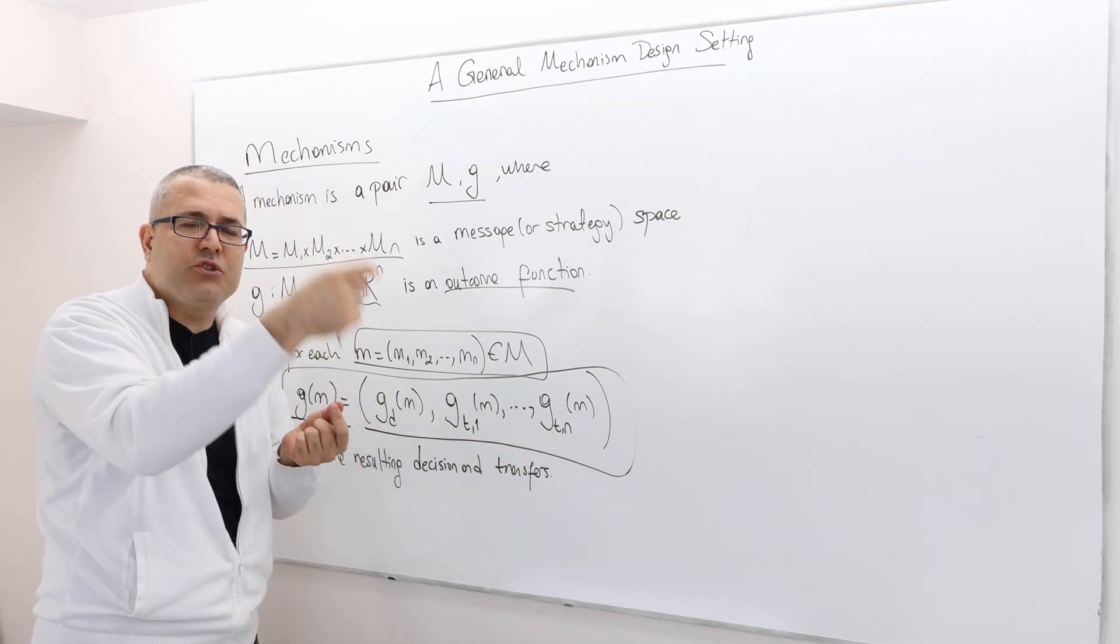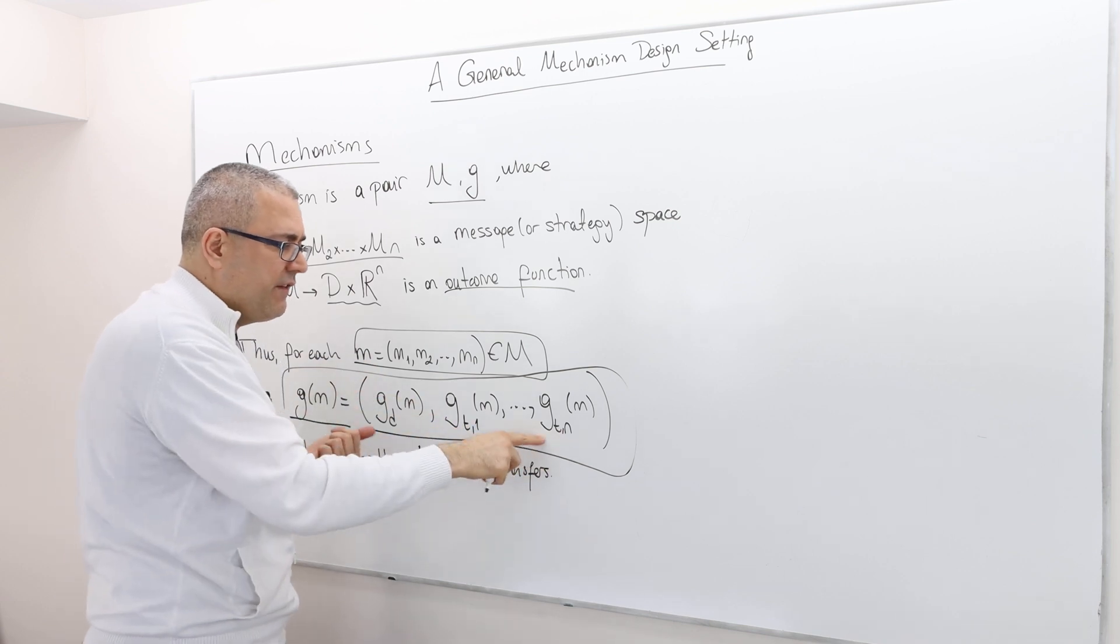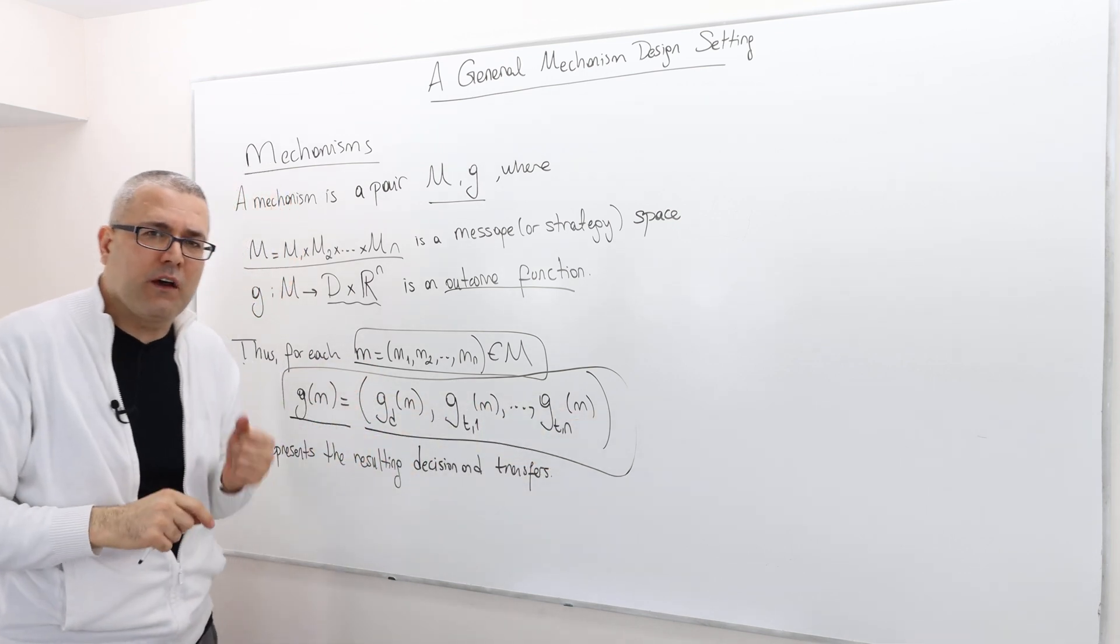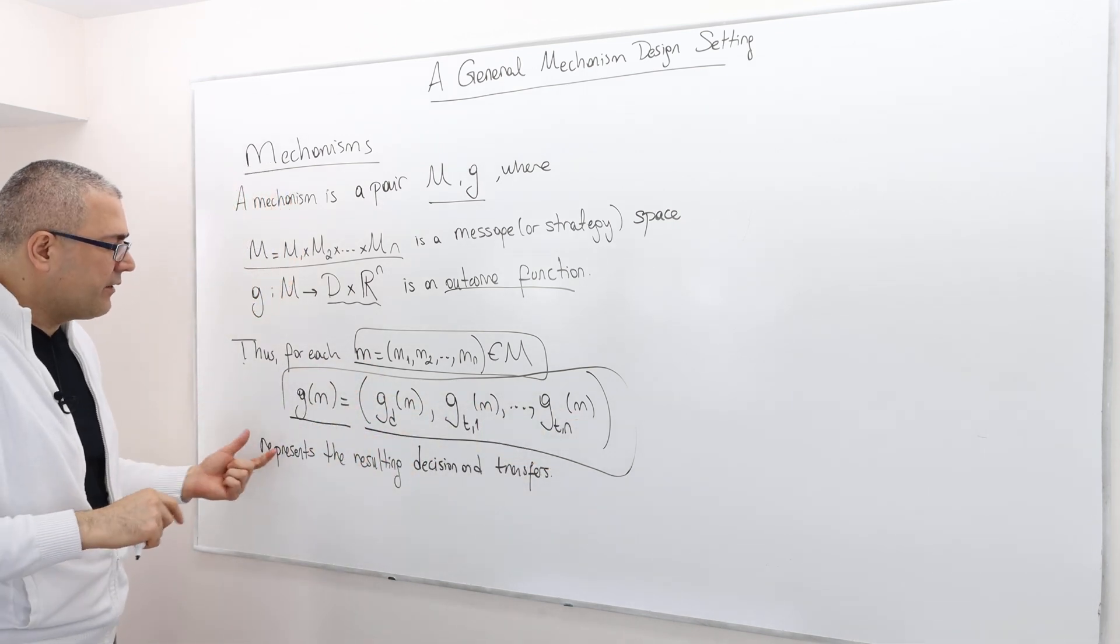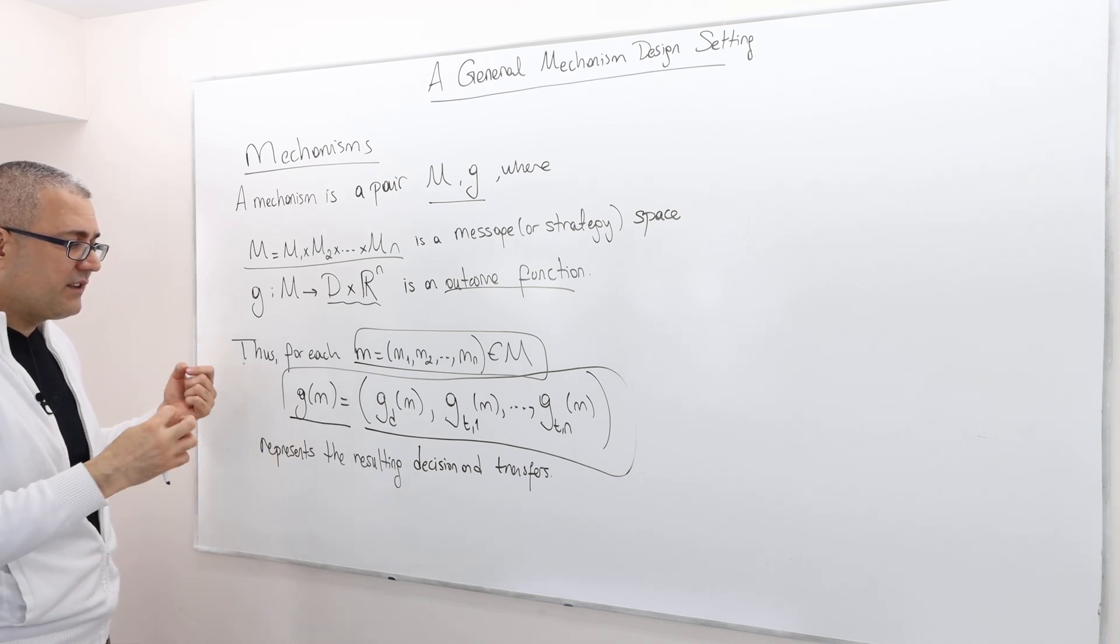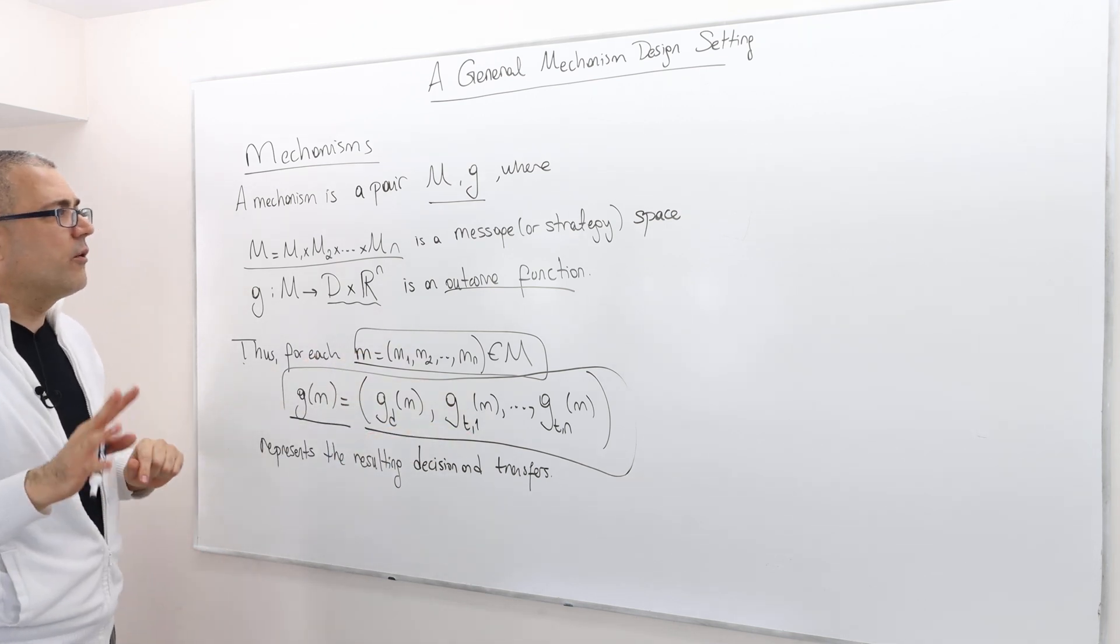And G_TN is what is the transfer of the Nth individual once the message profile is realized. So that represents the resulting decision and transfers.